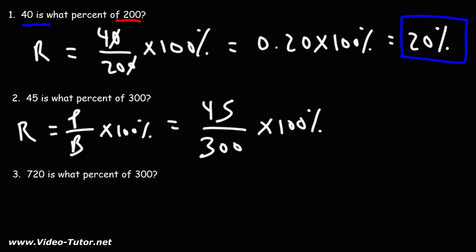Using the calculator: 45 times 100 divided by 300 gives us 15 percent. So 45 is 15 percent of 300.